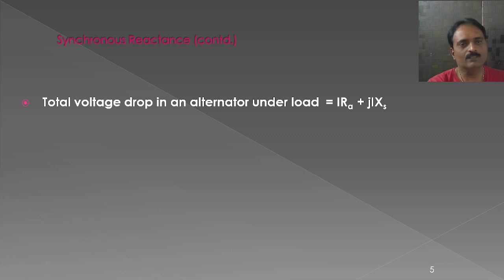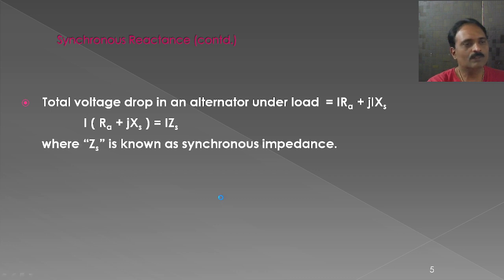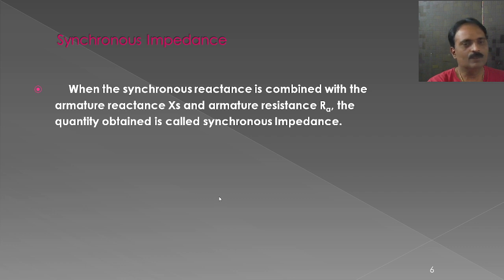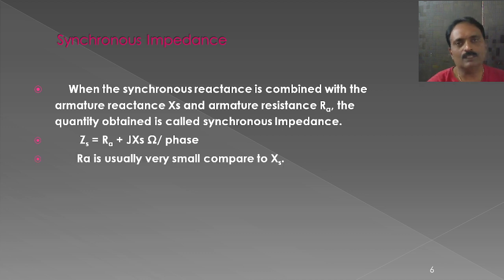The total voltage drop in an alternator is given as I×RA + j(I×XS). The combined effect of armature resistance and synchronous reactance is known as synchronous impedance, represented by ZS. ZS equals RA + j×XS ohms per phase, where XS is the combination of XA and XL. Generally, the armature resistance is very small compared to XS, so in most cases the magnitude of ZS can be taken as equal to directly the synchronous reactance XS.